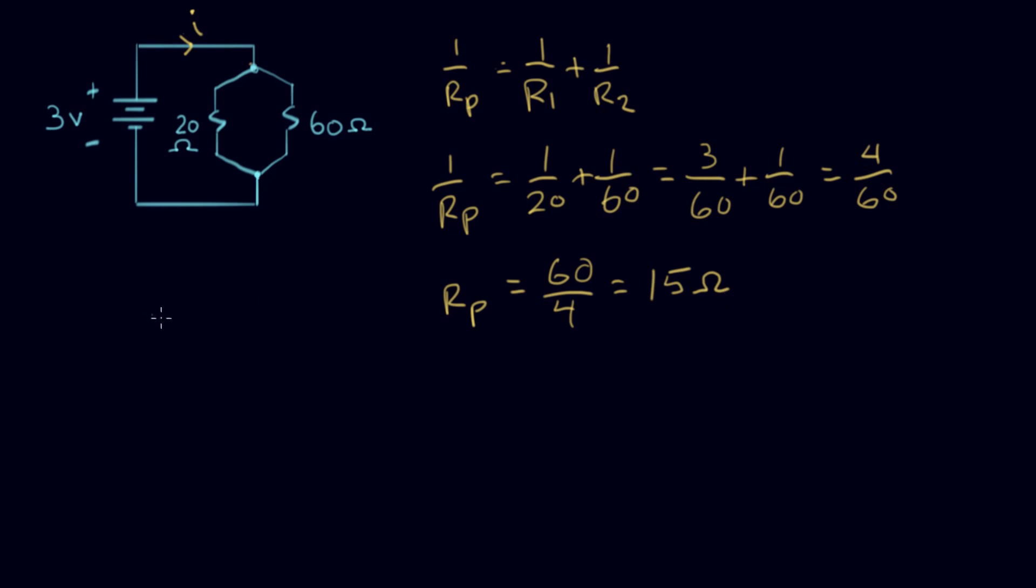So what this is telling us is if we have two resistors in parallel, 20 ohms and 60 ohms, for the purposes of calculating the current here, that's the same as 15 ohms. It's hooked to three volts, just like that.